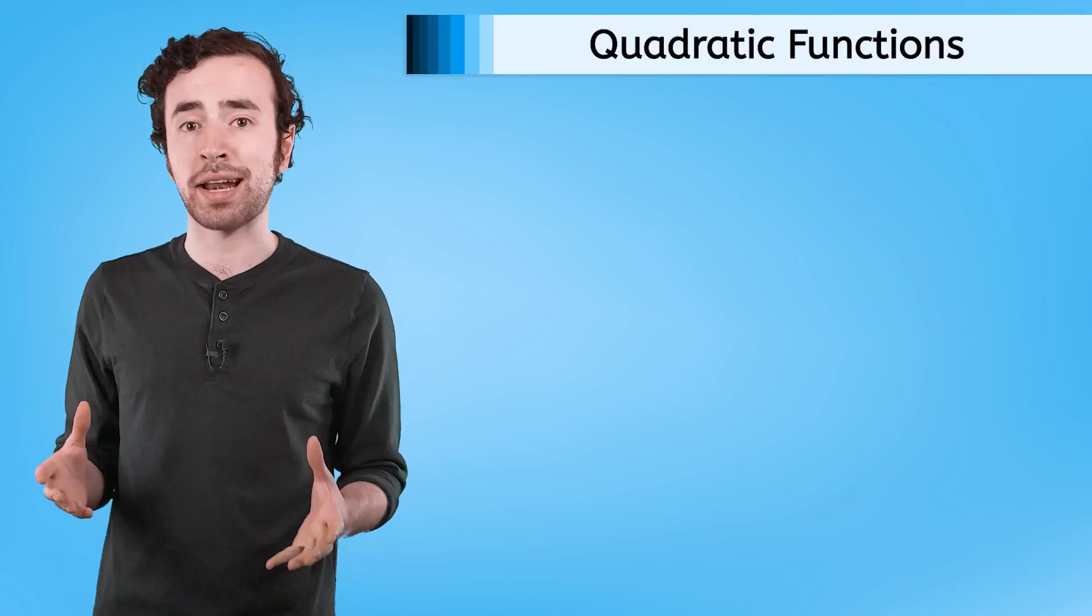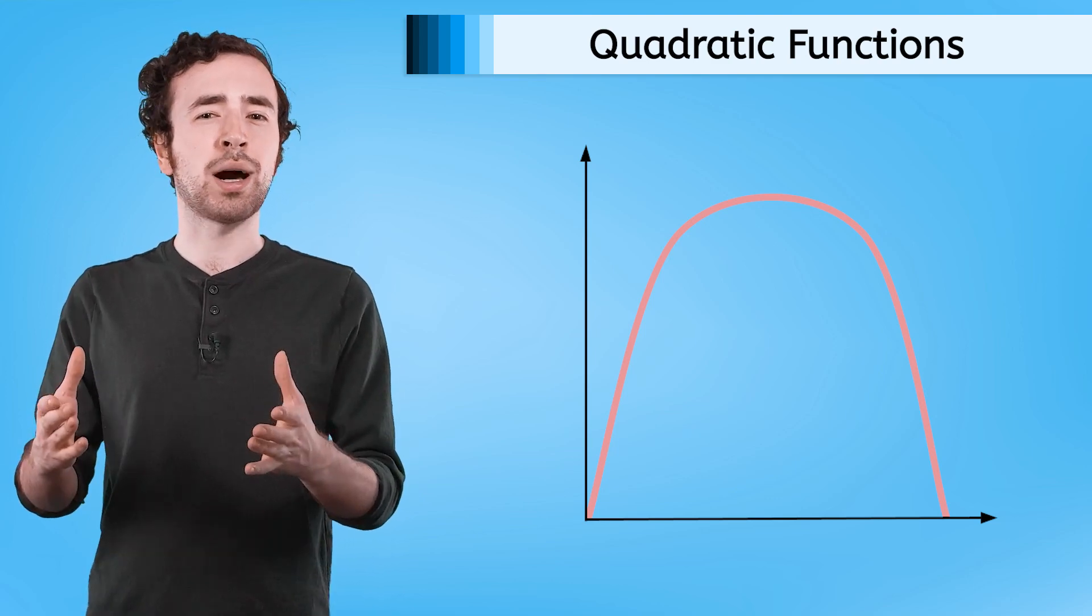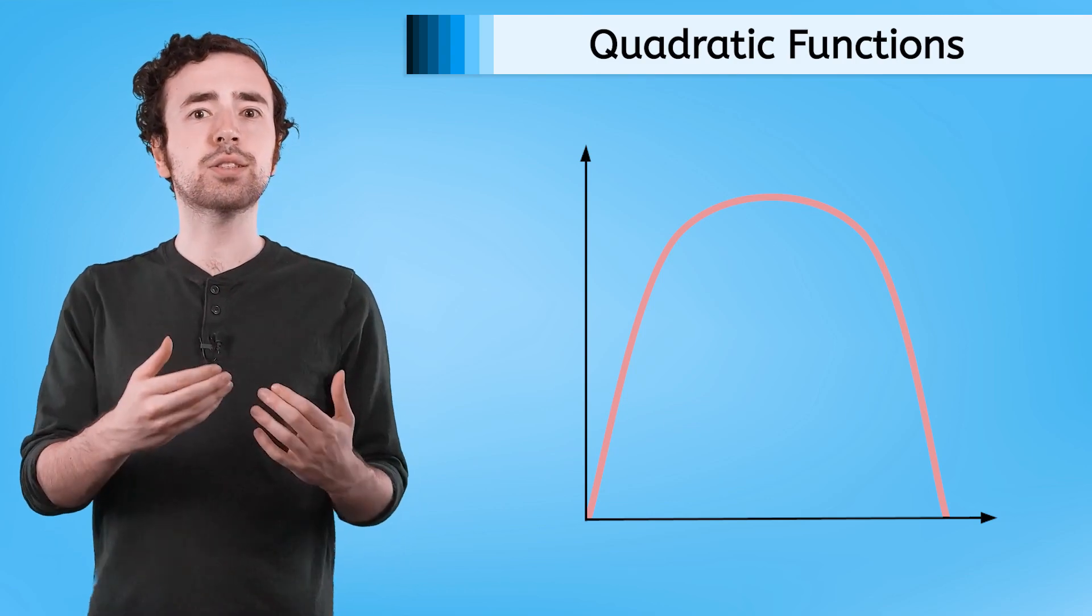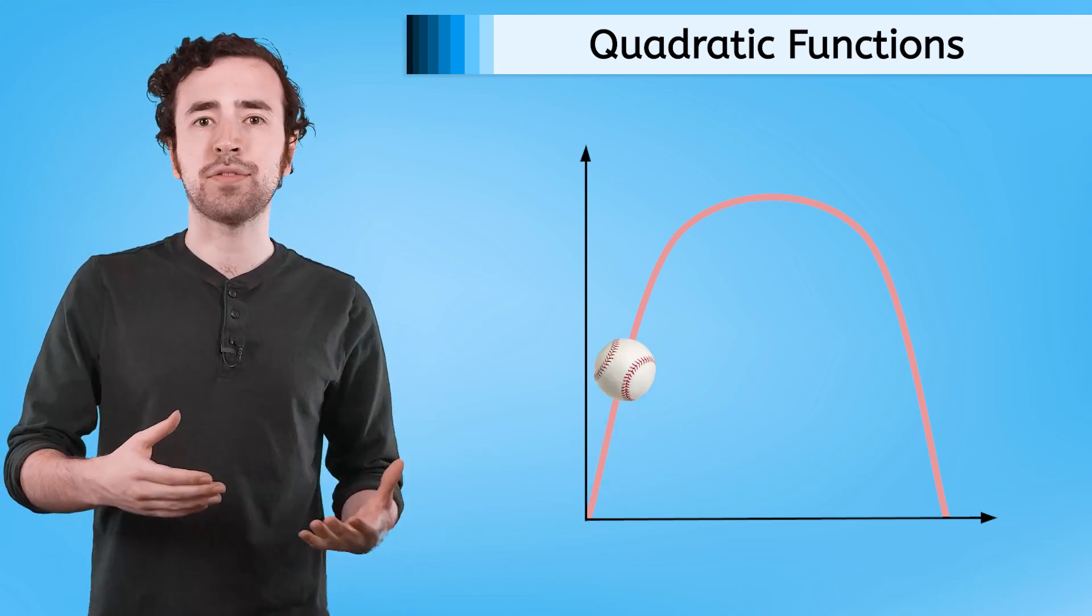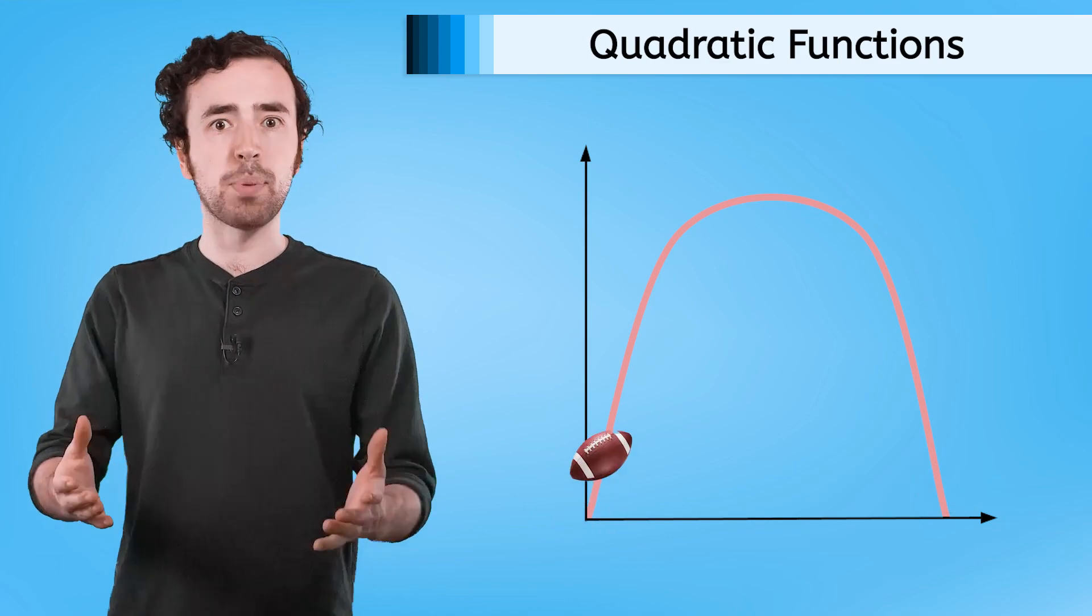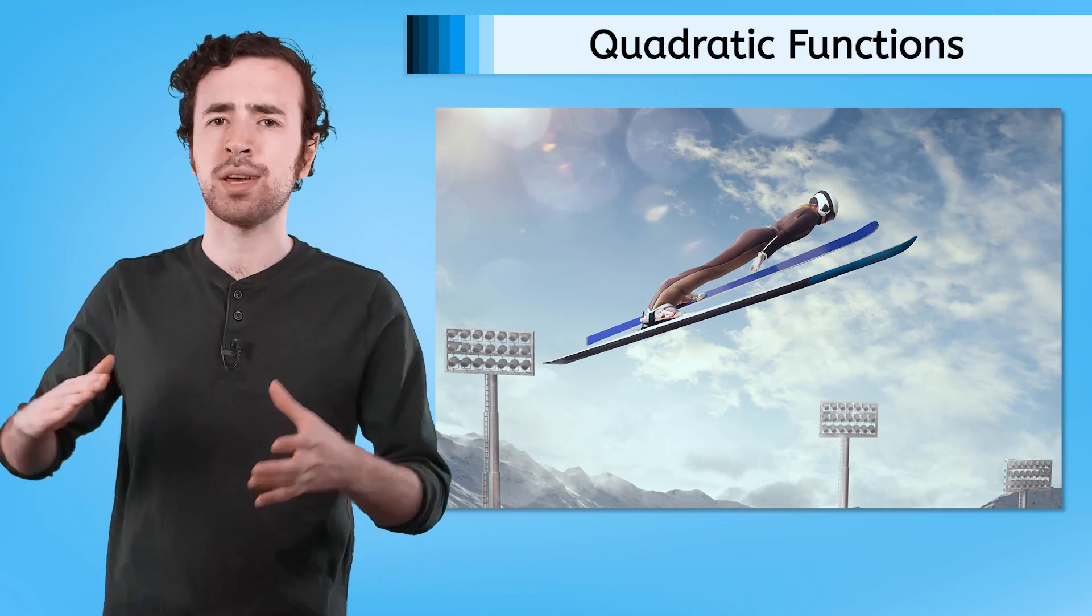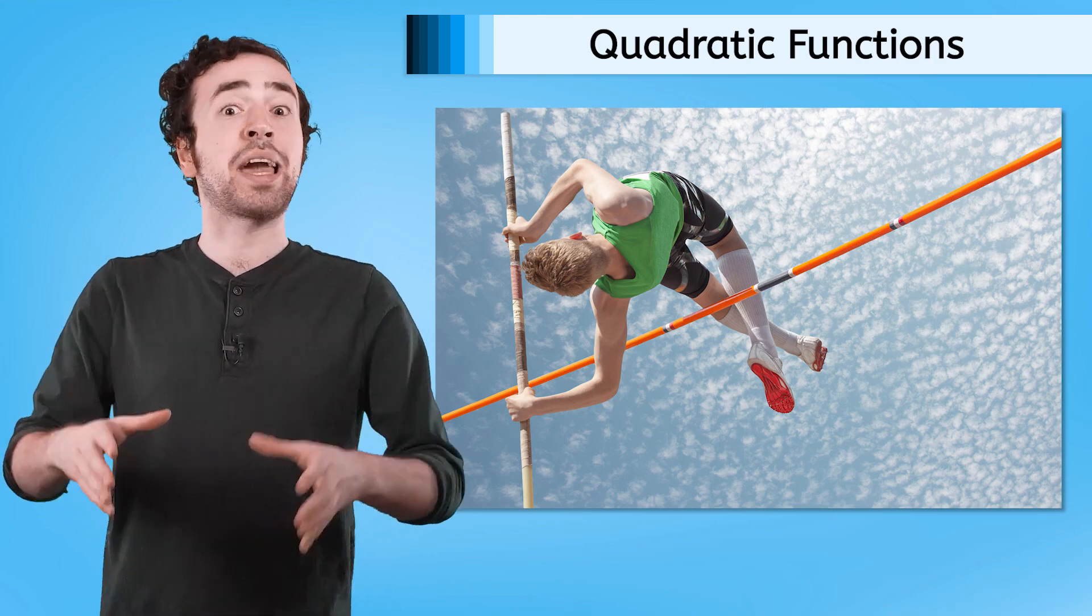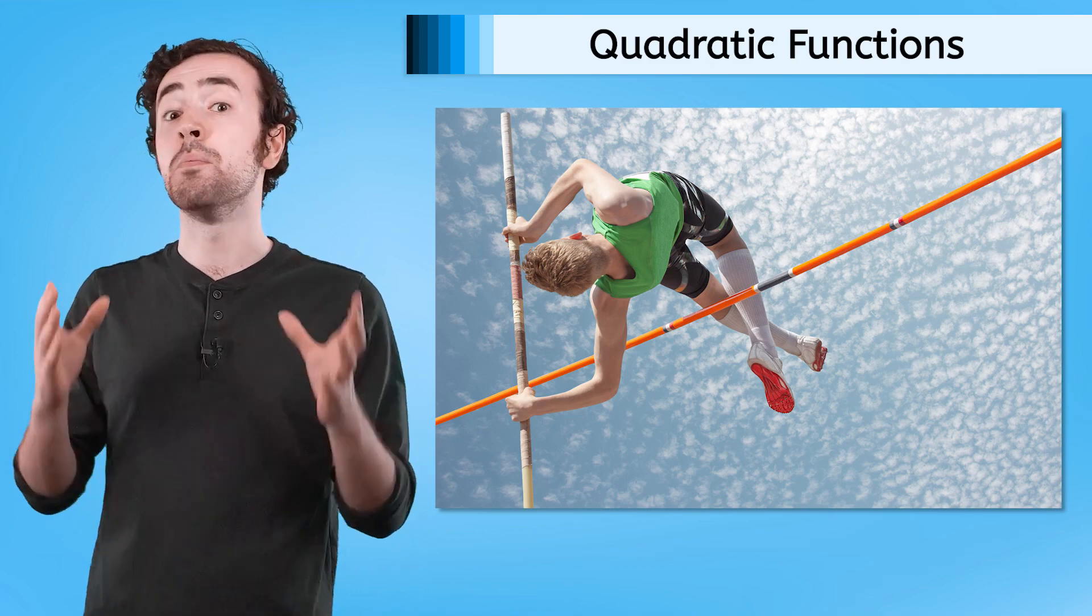The final type of equation we'll be looking at in this course is the quadratic function. Are there any real-world situations that you think we could model with this shape? To me, this looks like a ball flying through the air. Maybe we could use this to model the path of a fly ball in baseball or a football after you kick a field goal. It also kind of reminds me of the path a ski jumper takes when they take off or that a high jumper takes in track and field. There's a reason I'm giving a lot of sports examples of quadratic functions. It's because they're commonly used to model motion.